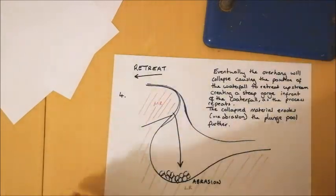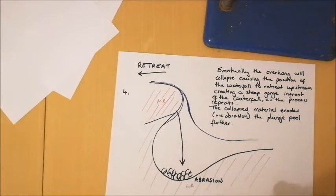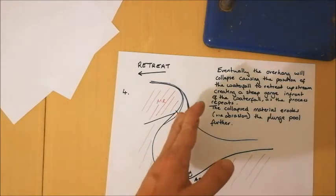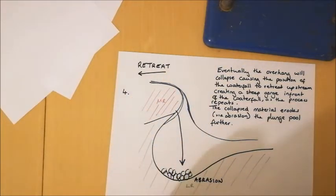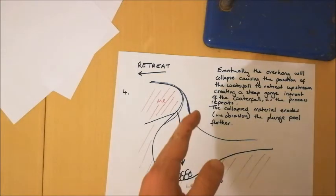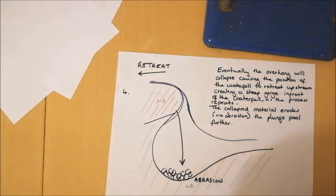What's going to happen over time is that undercut is going to become larger and larger until eventually the overhang cannot support itself, and that overhang will eventually collapse into the plunge pool. The waterfall is then going to retreat to a new position. The process will then occur again and repeat with successive undercutting and overhangs collapsing into the plunge pool, meaning that the waterfall retreats upstream. As it does so, it leaves behind a steep-sided gorge in front of it. That's the point that a lot of students forget to talk about, the development of the gorge in front of the waterfall. We could clearly see that in the photo of High Force at the start of this video.